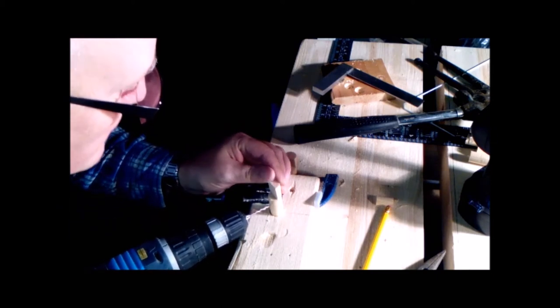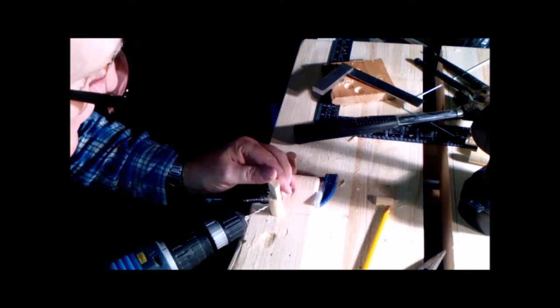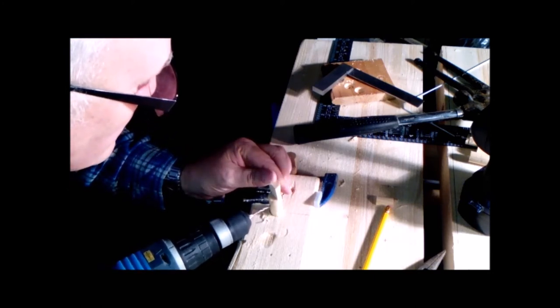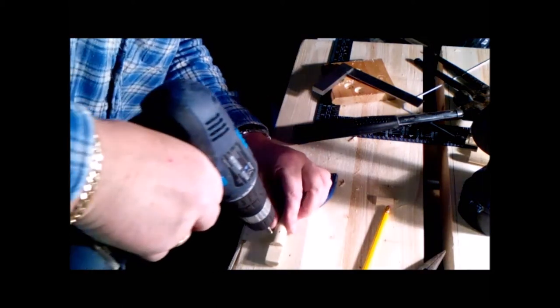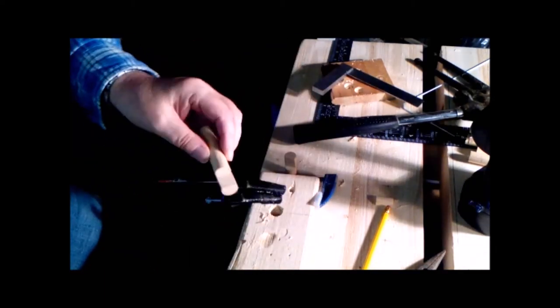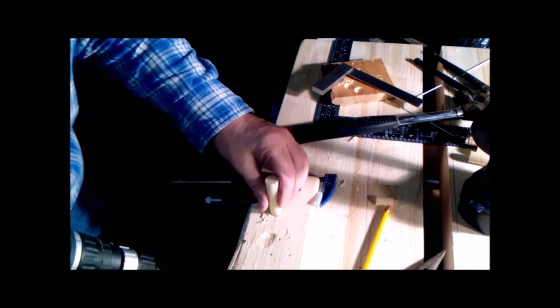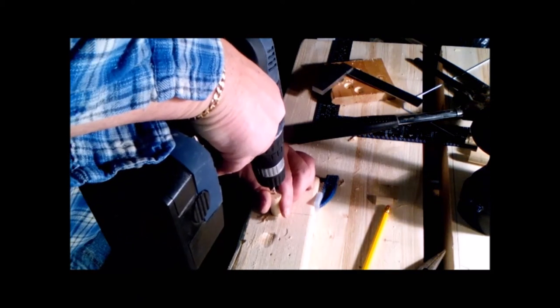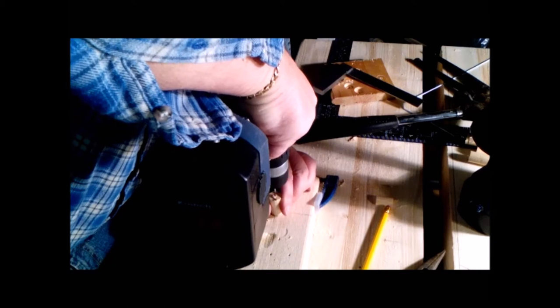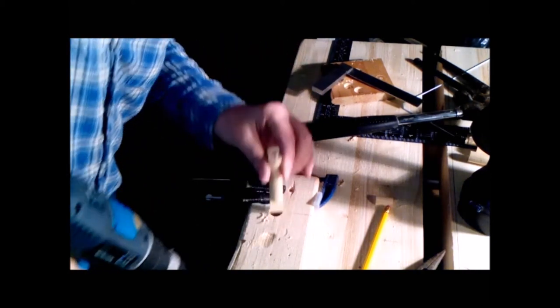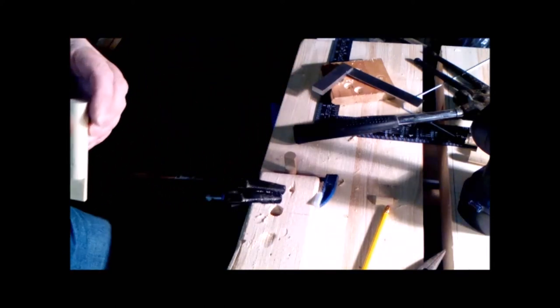I'm going to drill a hole now to receive the coat hanger wire, about an inch below that shoulder line, and I will drill it all the way through. I'm using the backer board there so I don't drill into my nice new bench. Then I'm going to drill a hole about half the depth of the drill into the base of the dog hole.